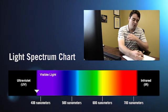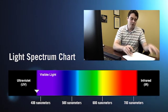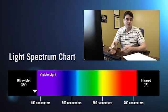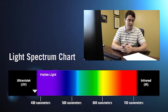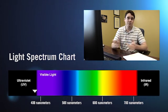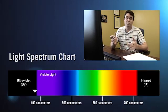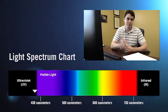Once we move down to 365 nanometers, that's when we get off the visible spectrum. For the majority of human beings, a 365 fixture will not be visible until it hits its target.